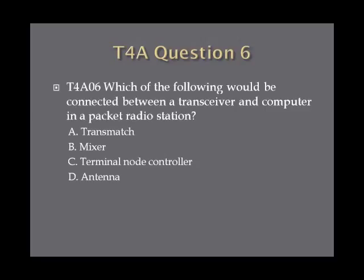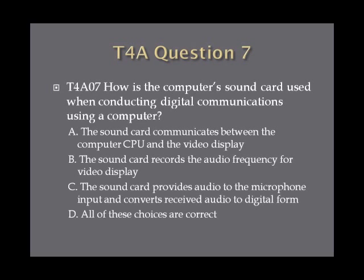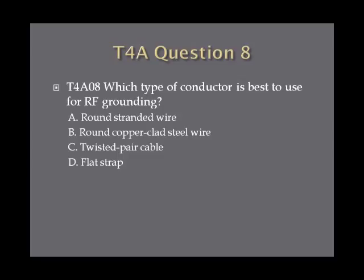Question 6: Which of the following would be connected between a transceiver and computer in a packet radio station? A. A transmatch. B. Mixer. C. Terminal node controller. Or D. Antenna. Question 7: How is the computer's sound card used when conducting digital communications using a computer? A. The sound card communicates between the computer CPU and the video display. B. The sound card records the audio frequency for video display. C. The sound card provides audio to the microphone input and converts received audio to digital form. Or D. All of these choices are correct. Question 8: Which type of conductor is best to use for RF grounding? A. A round stranded wire. B. Round copper clad steel wire. C. Twisted pair cable. Or D. Flat strap.